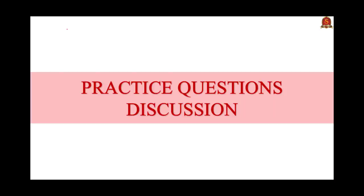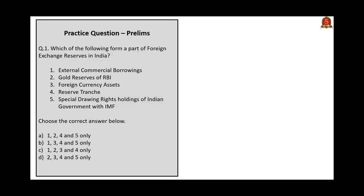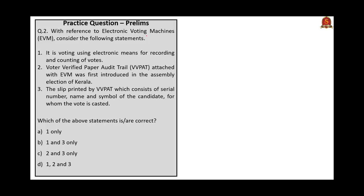We have now come to the final part of our video — the practice questions discussion. The first question asks: which of the following form a part of foreign exchange reserves in India? Options include external commercial borrowings, gold reserves of RBI, foreign currency assets, and special drawing rights holdings of Indian government with IMF. As we know from our discussion, external commercial borrowings are not included in foreign exchange reserves in India, hence the correct answer is options 2, 3, 4 and 5.